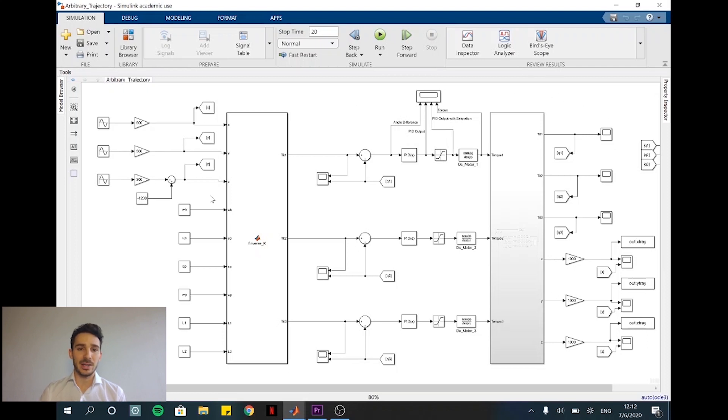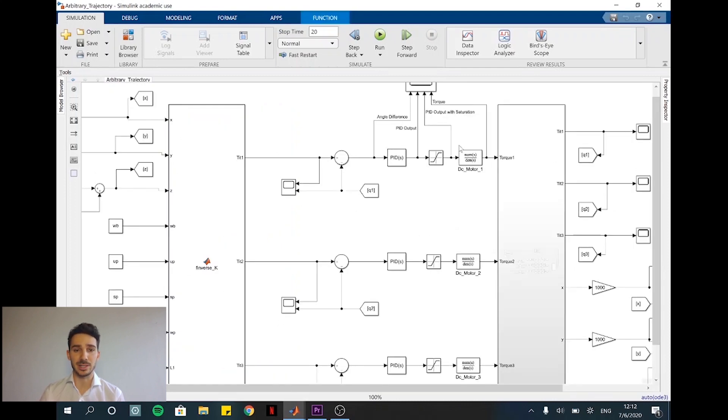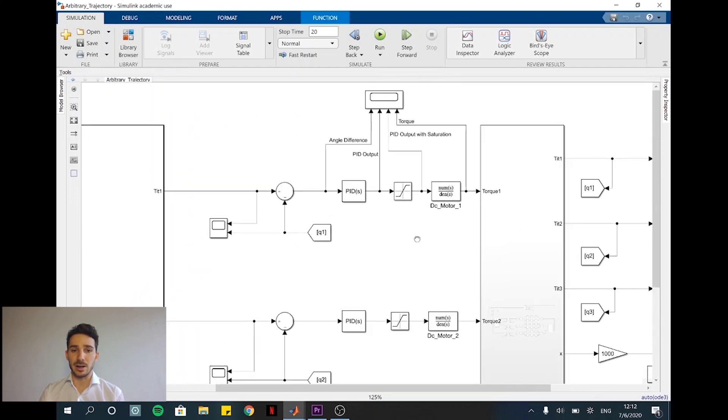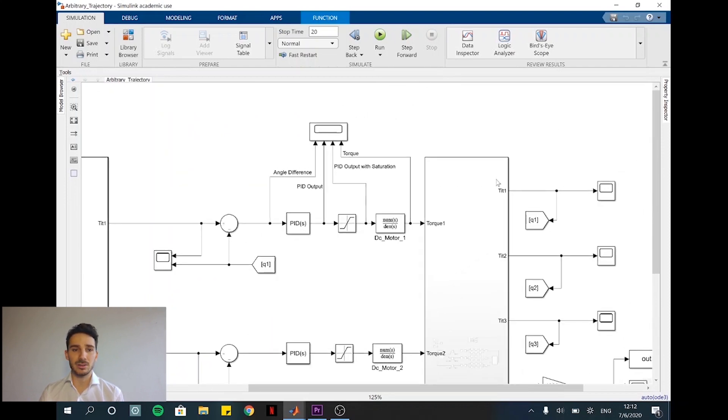On this window, it is represented the entire structure of the robot. And if we focus our attention on this section, we will find the input trajectory of the end effector that arrives to the inverse kinematic block. This block returns as output theta1, theta2 and theta3 that are the joint angles of the actuators. For each one of these angles, there is a corresponding feedback control loop where on its inside it is present a PID controller, a saturation stage and a transfer function representing the DC motor.